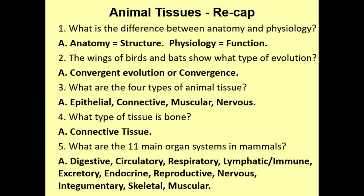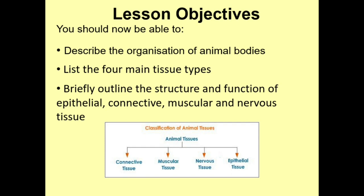Hopefully you did well with those. If not, go back over things a few times — we're going to revisit a lot of this in coming sessions where we look at specific organ systems. By the end of this session you should be able to describe the basic organization of animal bodies: specialized cells come together to form tissues, tissues come together to form organs, and organs work together to make organ systems. You should be able to list the four main tissue types — connective, muscular, nervous, and epithelial — and briefly outline the structure and function of each. Thanks very much, and I'll see you in the next session.